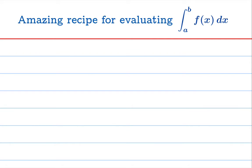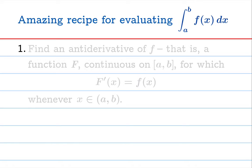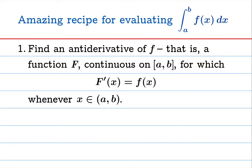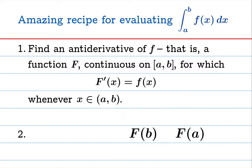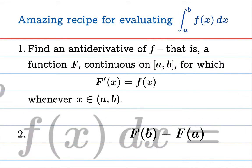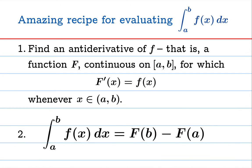Here's an amazing recipe for evaluating the definite integral of a function on the interval from a to b. Step one: find an antiderivative of the integrand function f — that is, a function capital F, continuous on the closed interval, for which F prime of x equals the integrand function whenever x is in the interior of the interval. In such a situation, F of b minus F of a is amazingly equal to the value of the definite integral on the interval from a to b.